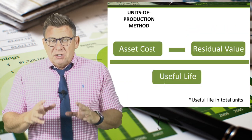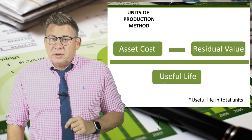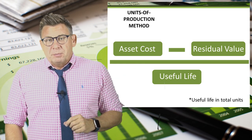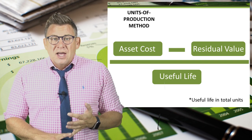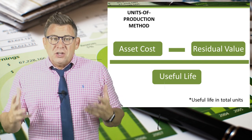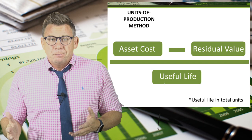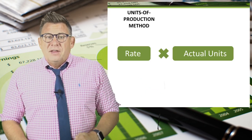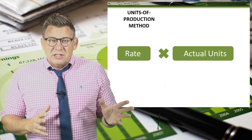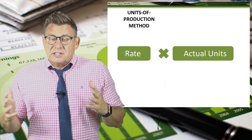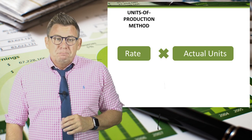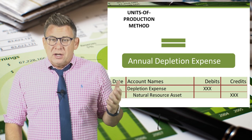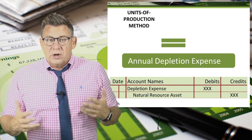When calculating depletion, we use a method you should already be familiar with — the units of production method. The formula is the asset cost minus the residual value divided by the useful life in total units, giving us a depletion rate per unit. Then we multiply the depletion rate per unit by the actual units extracted for the period to get the annual depletion expense recorded in our adjusting journal entry.